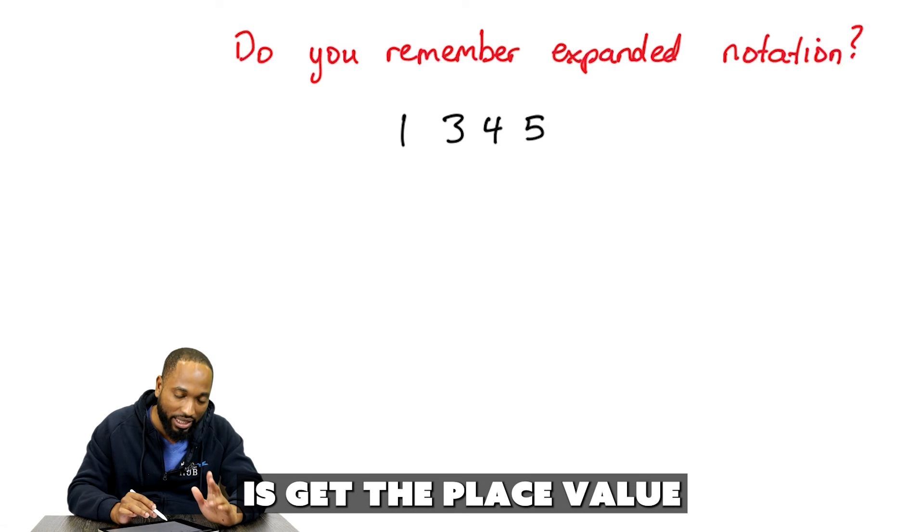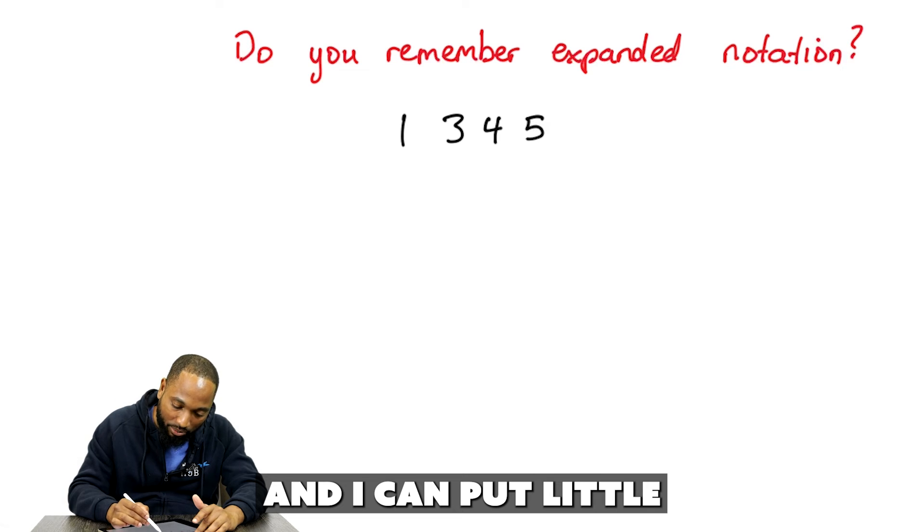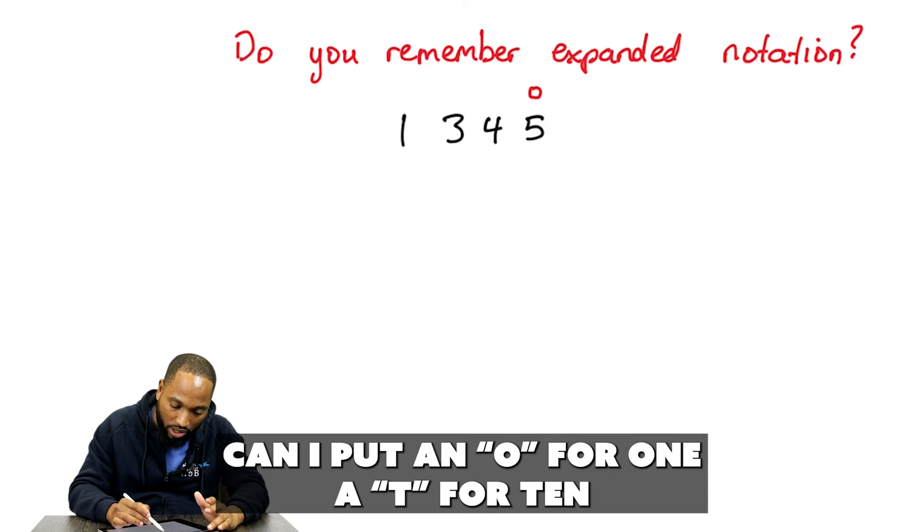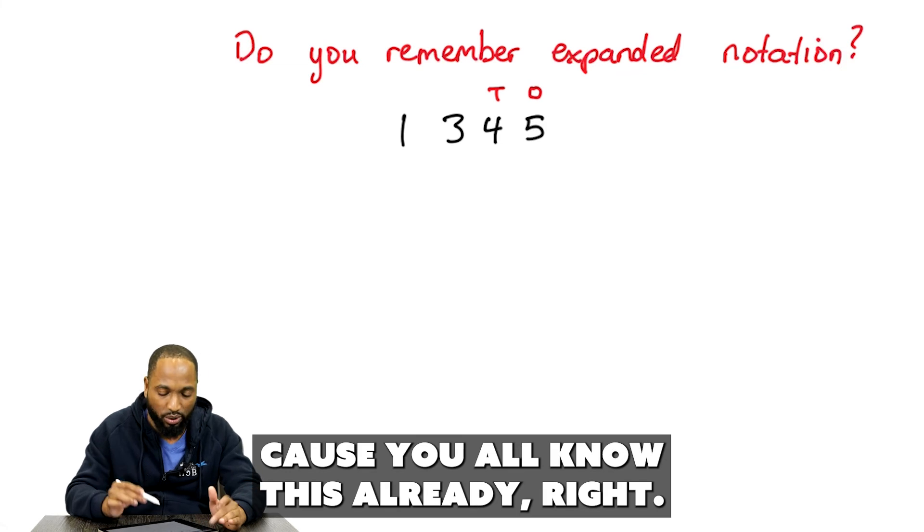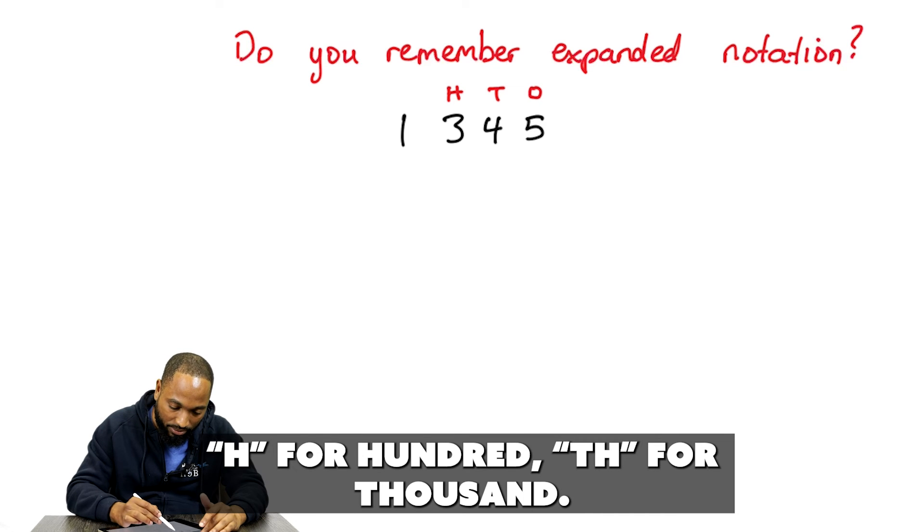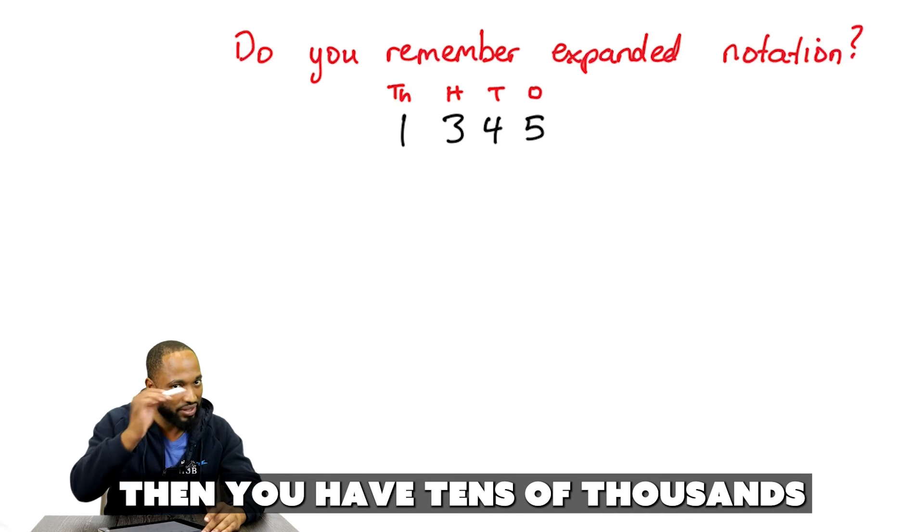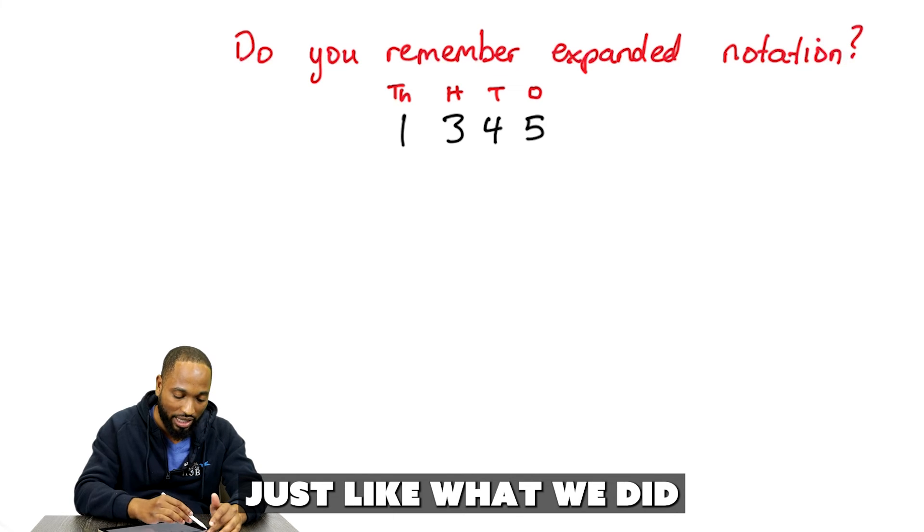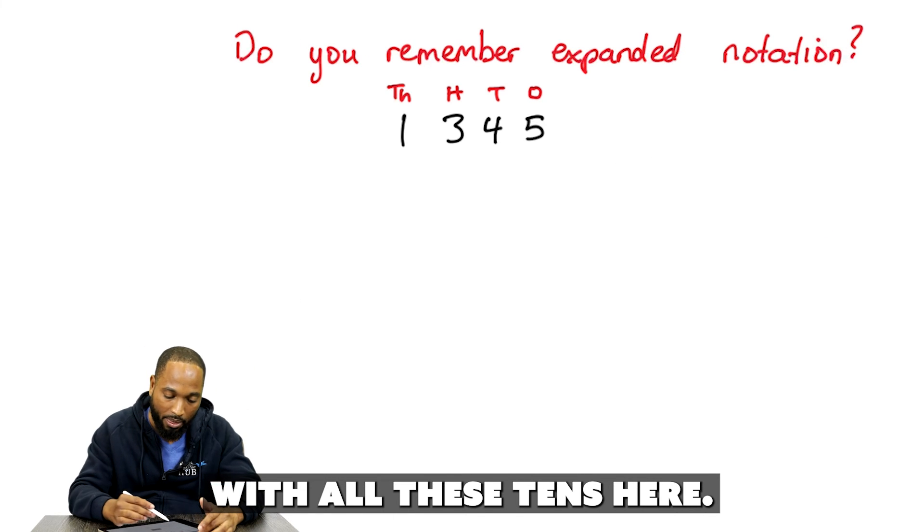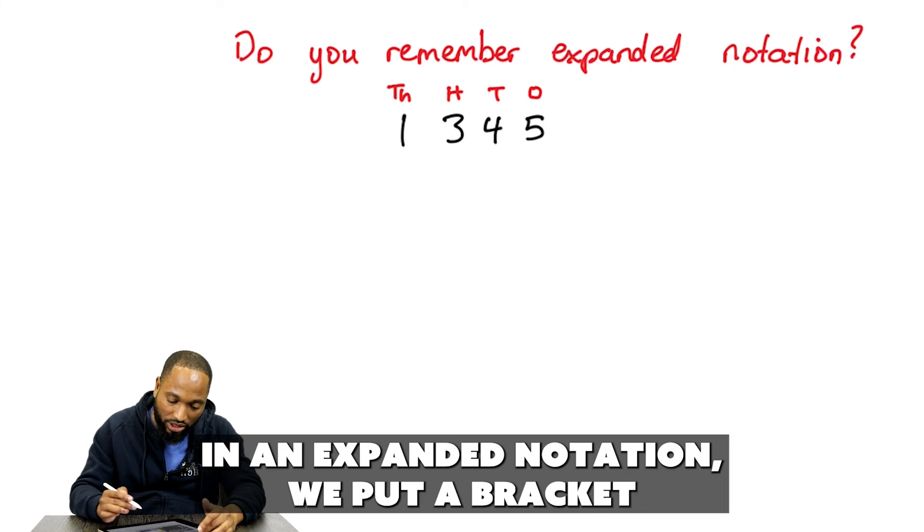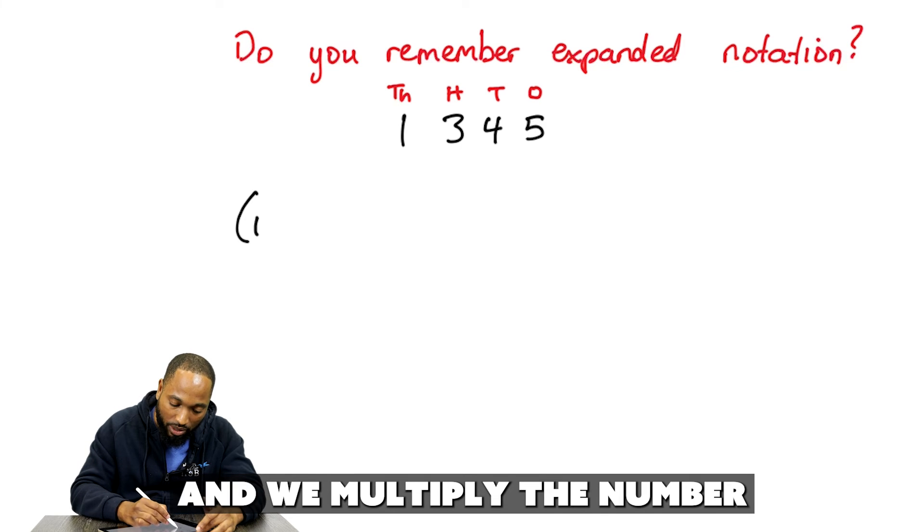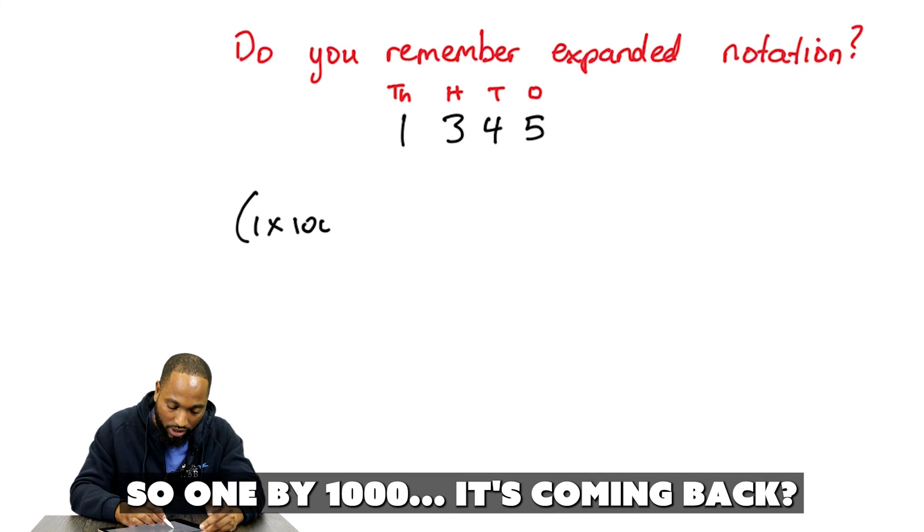So, what we'll have to do is get the place value. I can put an O for 1, T for 10. Because you all know this already, right? H for 100. TH for 1,000. Then you have tens of thousands. And we keep going on just like what we did with all these tens here. And if you want to put it in expanded notation, we put a bracket and we multiply the number by its place value. So, 1 by 1,000.